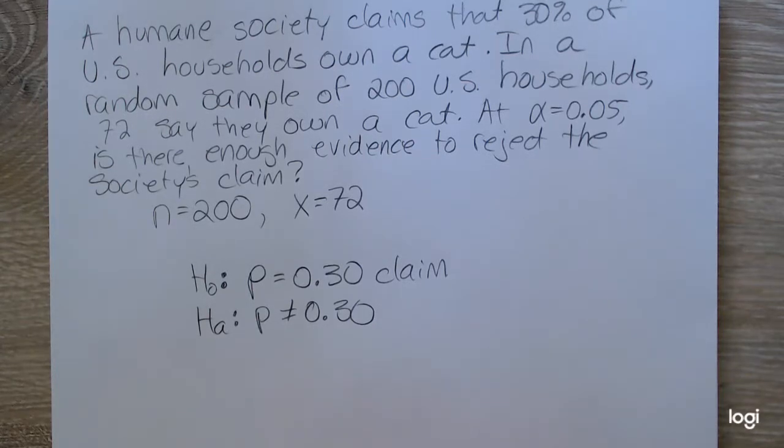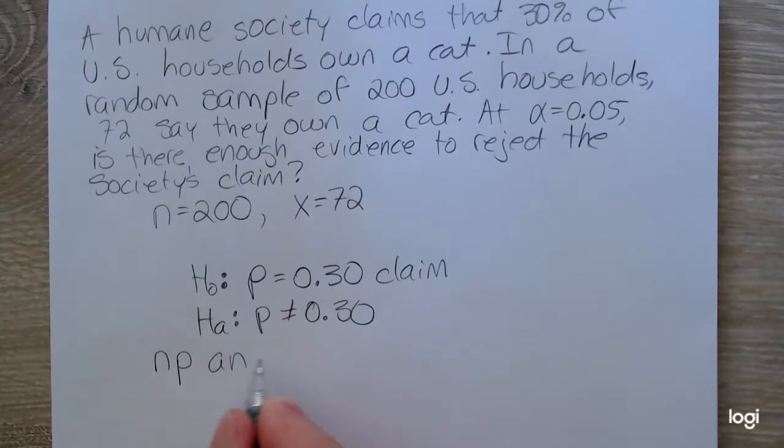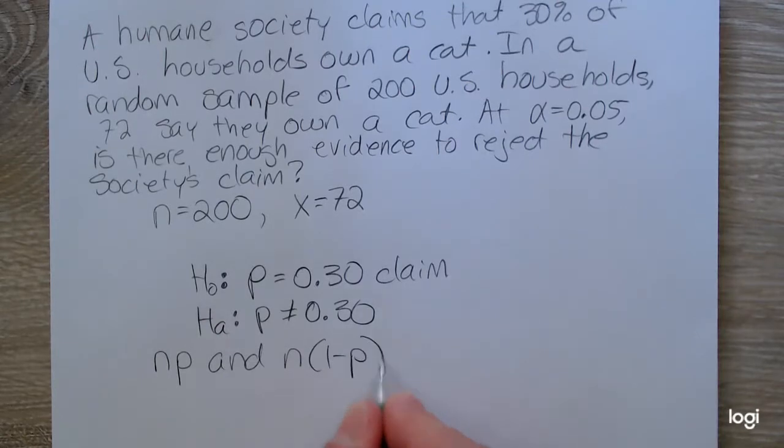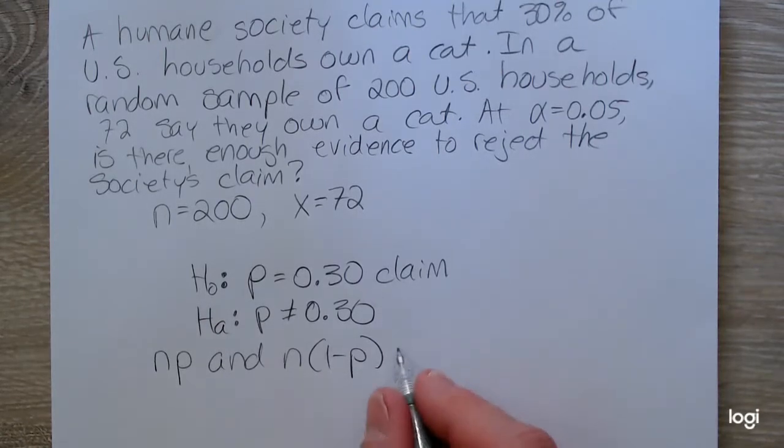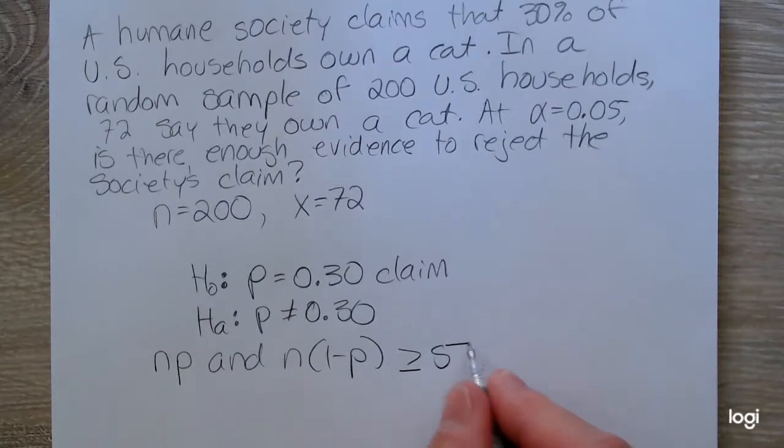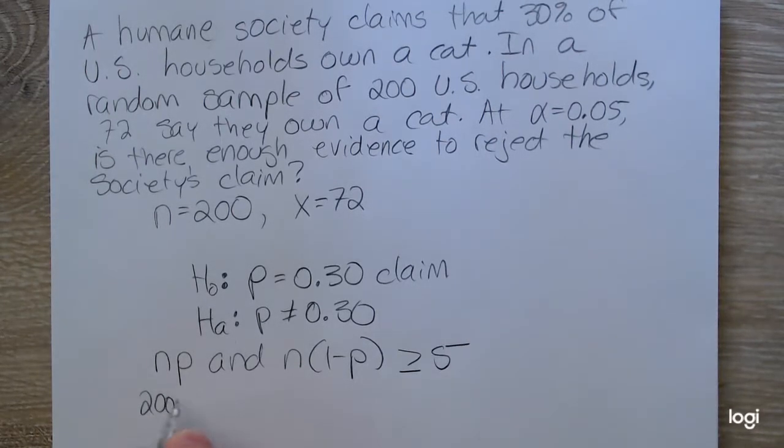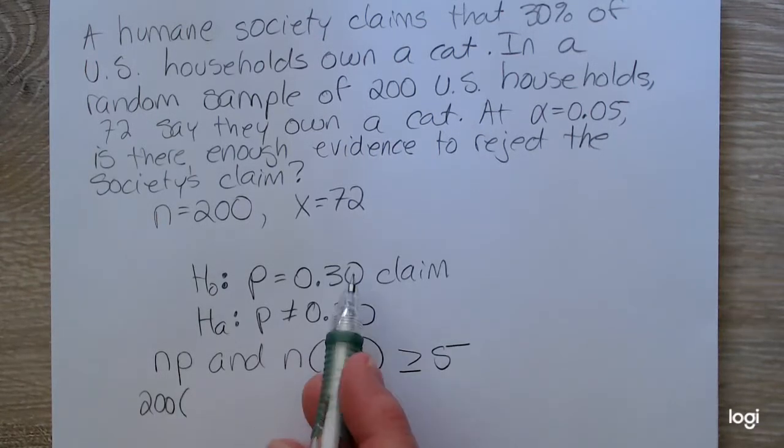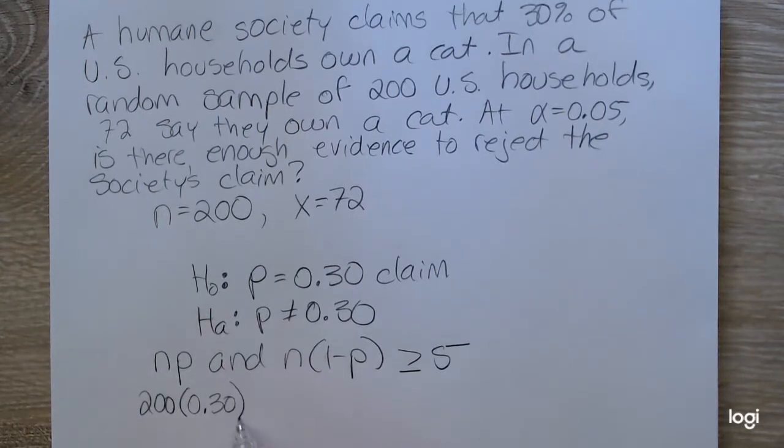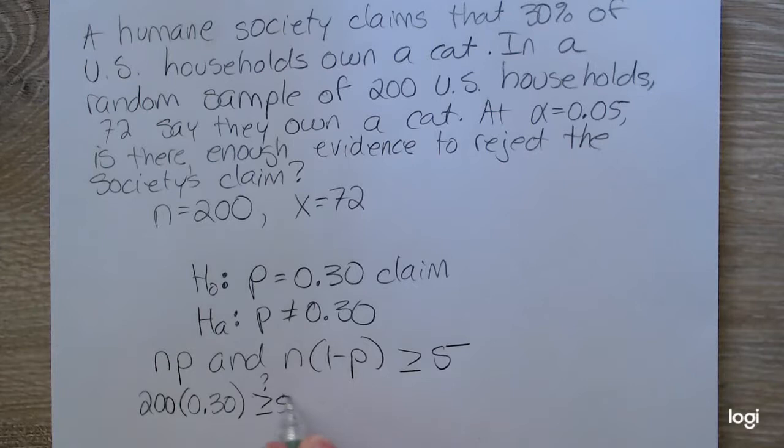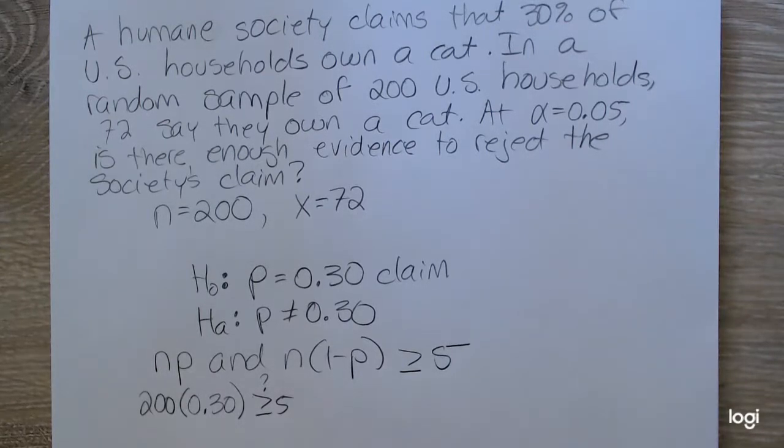So to test the conditions of whether or not we can use the Z distribution for this, we need to check if N times P and N times 1 minus P, some books call this Q, are both at least 5. So N in this problem is 200. The hypothesized or claimed value is 0.3. And we want to know is that at least 5. Well, 30% of 200 is 60, and that's definitely at least 5.